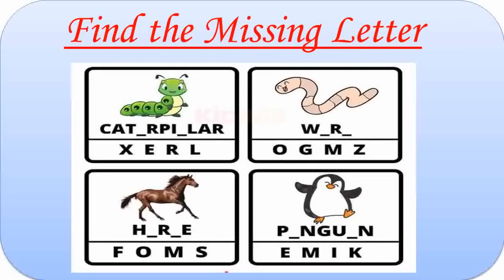Here are also some creatures or animals. First one is Caterpillar. Missing letters are E and L. C-A-T-E-R-P-I-L-L-A-R. Caterpillar. Second one is Worm. Missing letters are O and M. W-O-R-M. Worm. The third one is Horse. Missing letters are O and S. H-O-R-S-E. Horse. Fourth one is Penguin. Missing letters are E and I. P-E-N-G-U-I-N. Penguin.